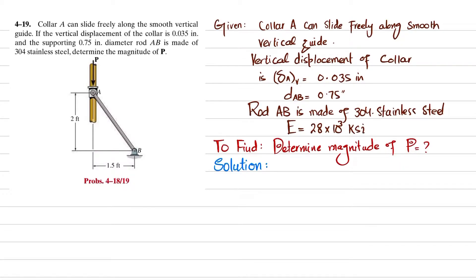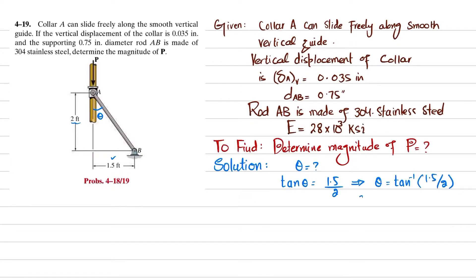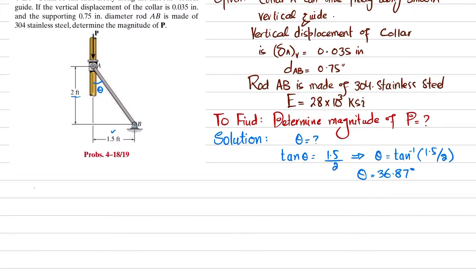First step: look at the angle which supporting rod AB makes with the vertical axis — that is theta. We can find theta first. Taking tangent of theta: tan(theta) equals perpendicular over base, so perpendicular is 1.5 and base is 2. From here, theta equals tangent inverse of 1.5 divided by 2, giving theta equal to 36.87 degrees.